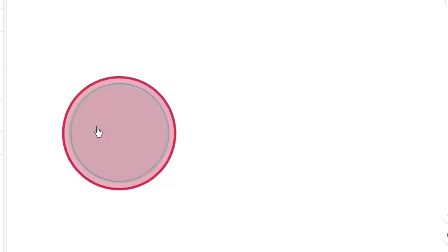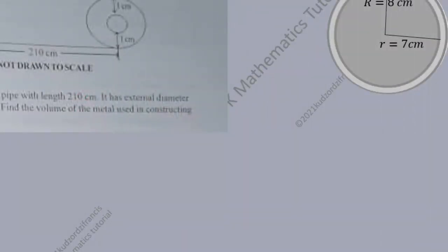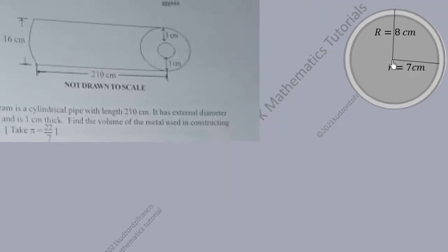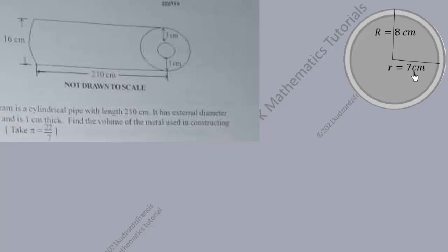The question tells us the external diameter is 16, so we use that to calculate the radius of the external cylinder, which is 8 — because half of 16 is 8 centimeters. We are told the cylinder is 1 centimeter thick, so the internal radius is 1 centimeter less than the external radius, which is 7 centimeters.